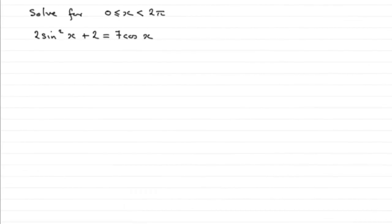Now for the last part of this question, we've got to solve for x where x is greater than or equal to zero radians but less than 2π radians. This equation: 2sin²x + 2 = 7cosx.